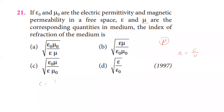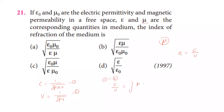Speed of light in vacuum is 1 divided by the square root of mu-naught times epsilon-naught. Speed of light in medium is 1 divided by the square root of mu times epsilon. Dividing equation 1 by equation 2, the refractive index equals the square root of mu times epsilon divided by mu-naught times epsilon-naught. So the answer is the second option.